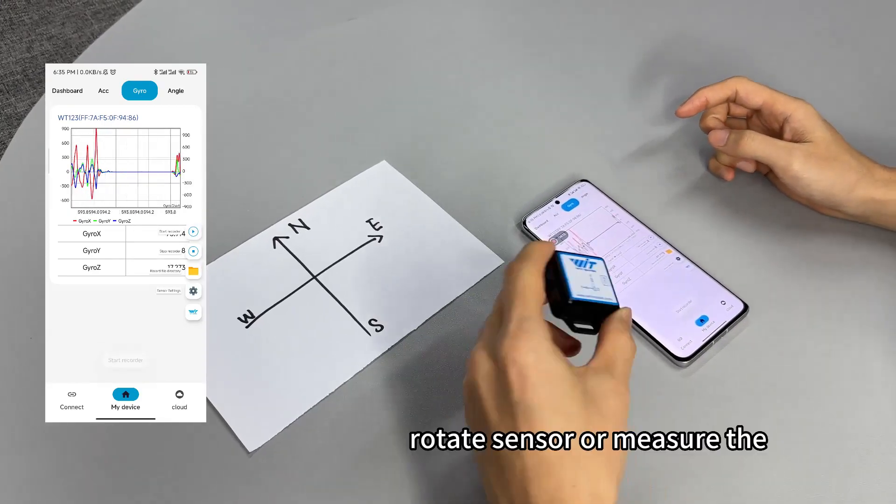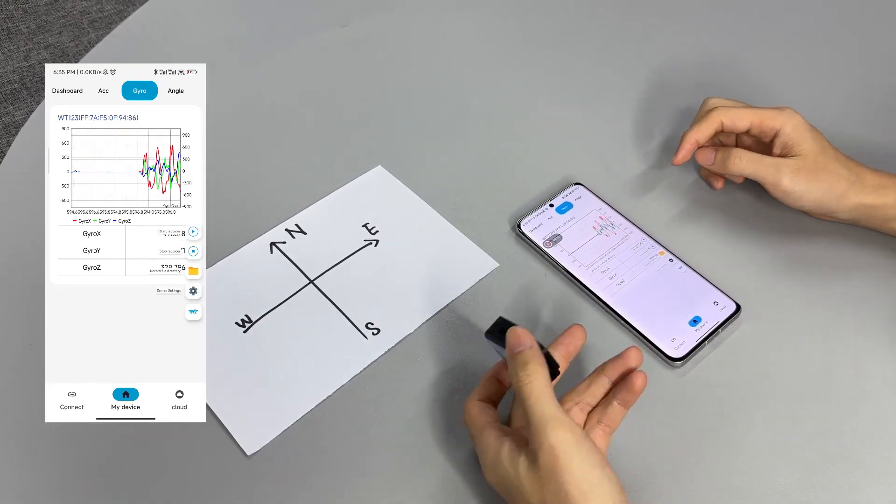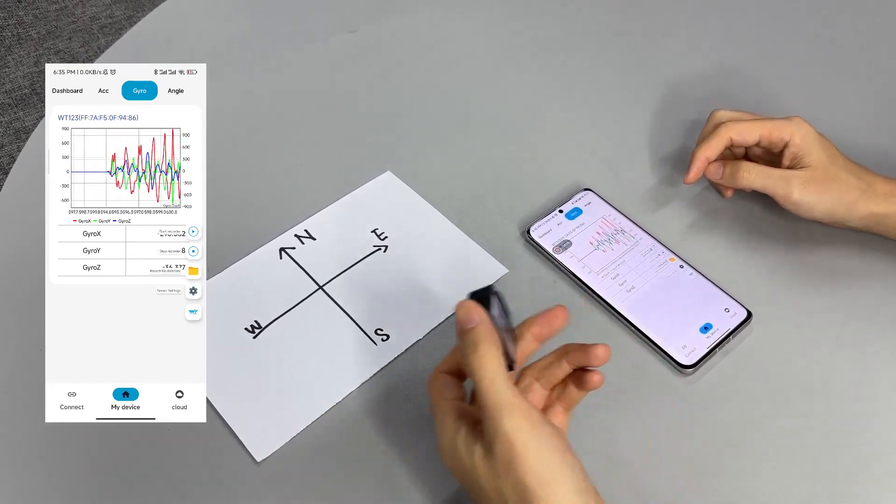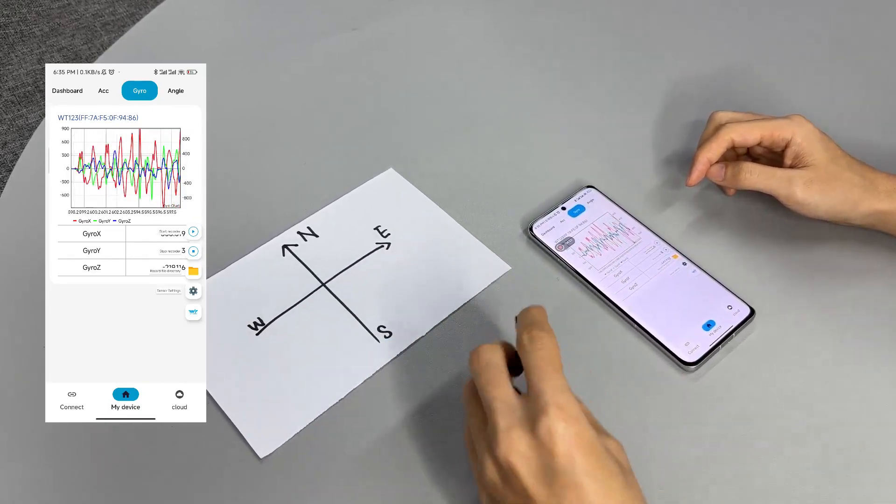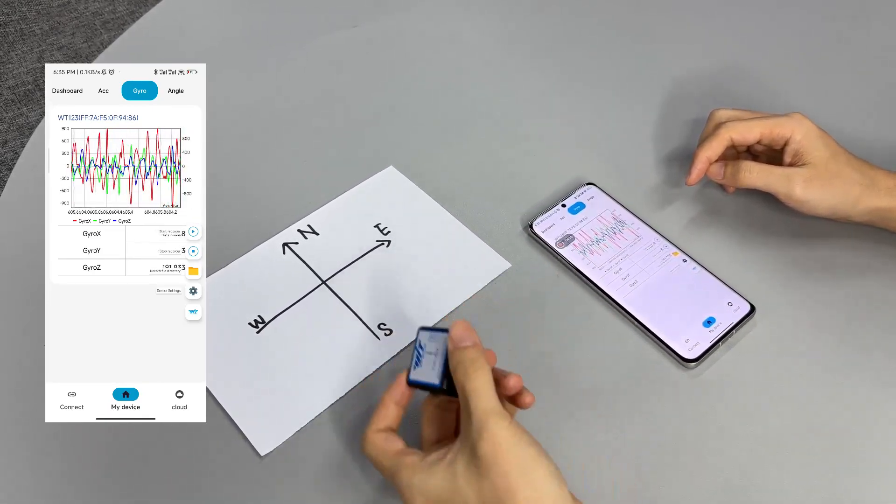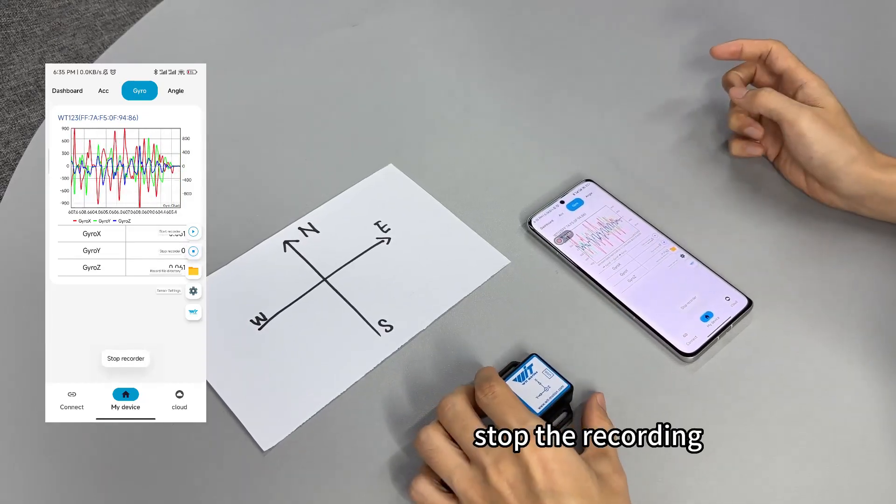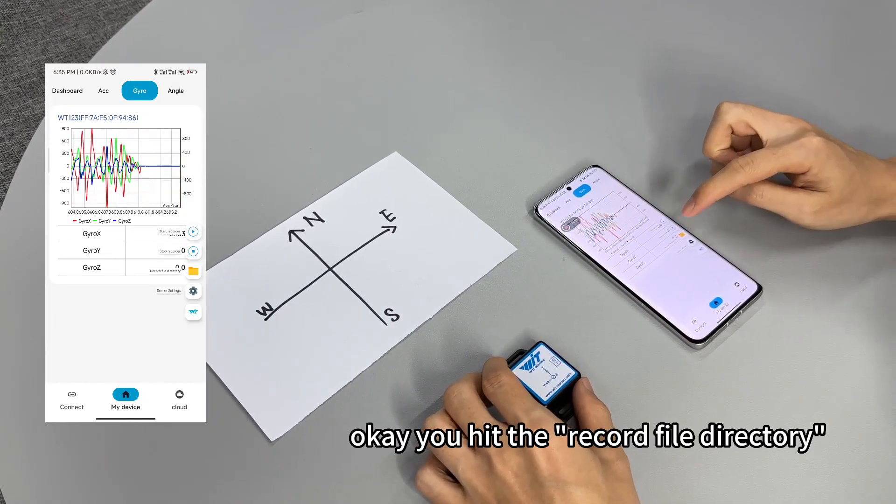Start record with rotate the sensor or measure the objectives that you prefer. Stop the recording. Okay, you hit the record file directory.